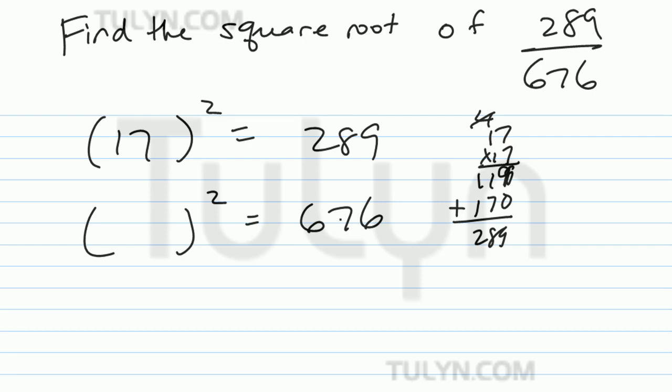So what times itself equals 676? Let's see, how about 26? 6 times 6 is 36. 2 times 6 is 12, plus 3 is 15. 6 times 2 is 12. 2 times 2 is 4, plus 1 is 5, plus 6 equals 7, 6. Okay, so 26 squared is 676.